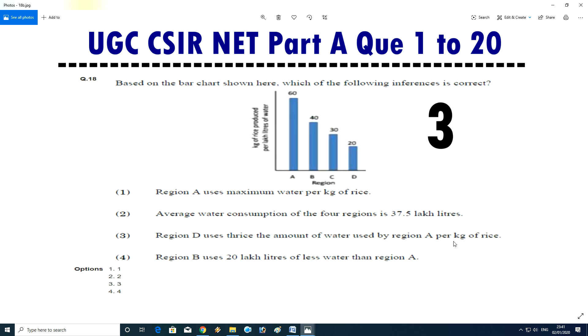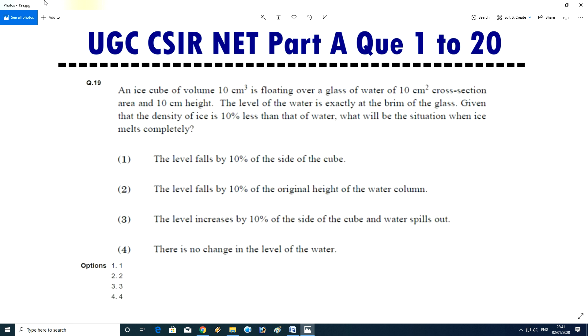Question number 19: an ice cube of volume 10 centimeter cube is floating over a glass of water of 10 centimeter square cross section area and 10 centimeter height. The level of water is exactly at the brim of the glass. Given that the density of ice is 10 percent less than that of water, what will be the situation when ice melts completely? Answer is D, there is no change in the level of water.